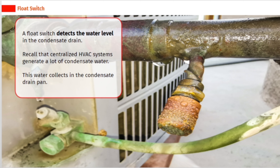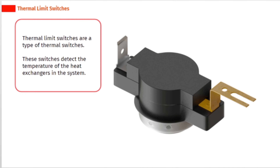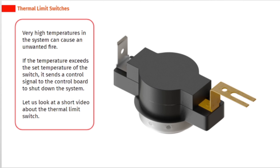A float switch detects the water level in the condensate drain. Centralized HVAC systems generate a lot of condensate water, which collects in the condensate drain pan. Safety controls specific to the heating part of the centralized HVAC system include the flame sensor, flame roll out switch, thermal limit switch, and exhaust draft pressure switch. Thermal limit switches detect the temperature of the heat exchangers. Very high temperatures can cause an unwanted fire, so if the temperature exceeds the set value, the switch sends a control signal to the control board to shut down the system.